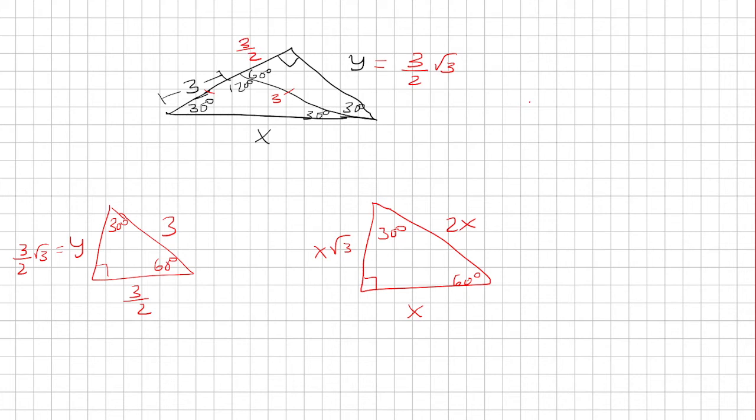So now let's solve for x by using Pythagorean Theorem. I'm going to be looking at the whole triangle. So this side is x, this is 3 plus 3 halves. Well, 3 is 6 halves, 6 halves plus 3 halves is 9 halves.